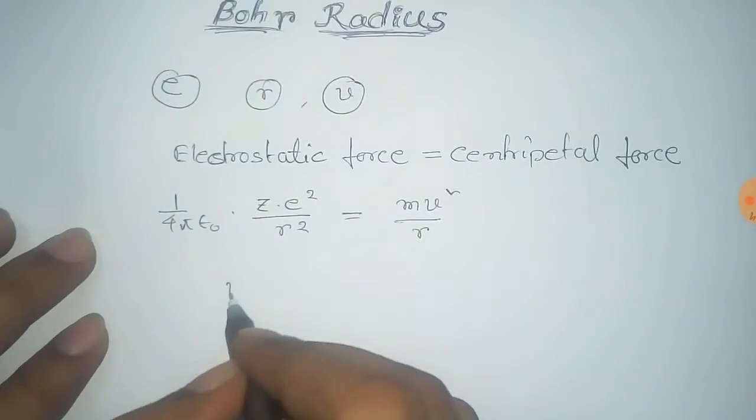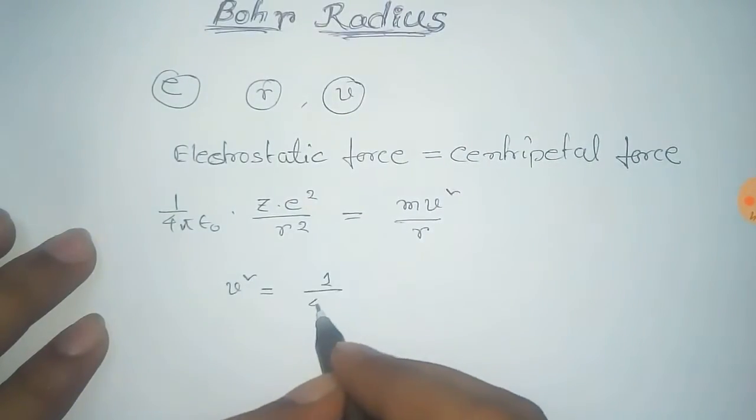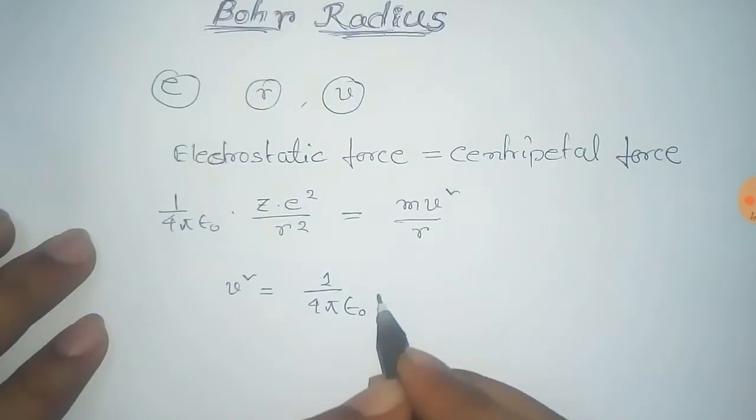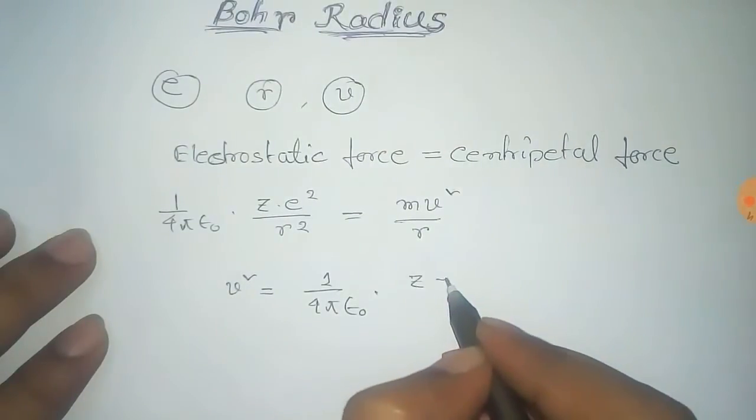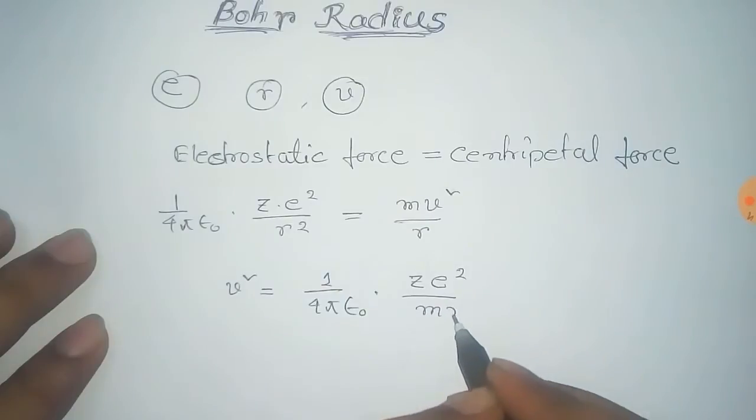From that we calculate and get the value of V², which equals 1/(4πε₀) times ZE² divided by MR.